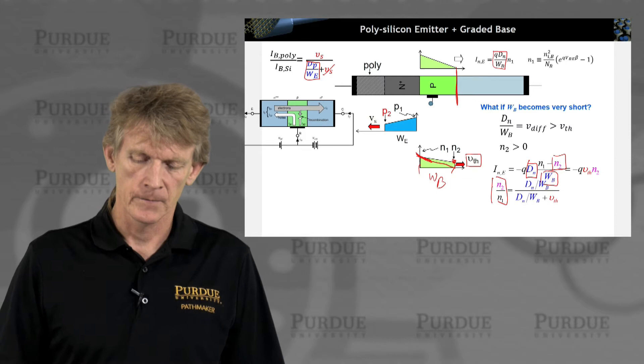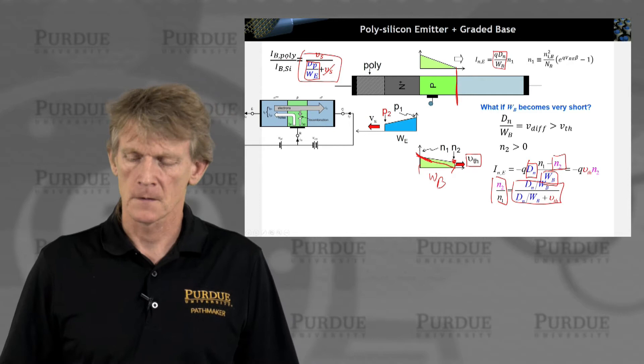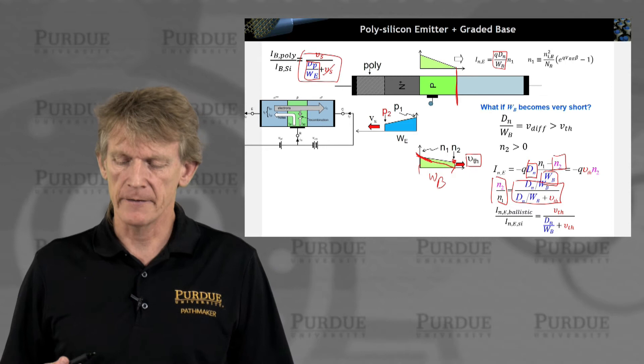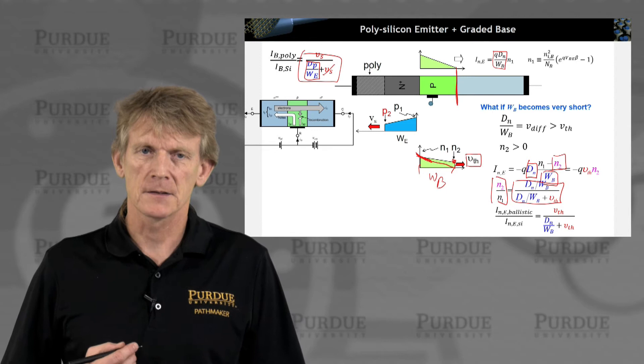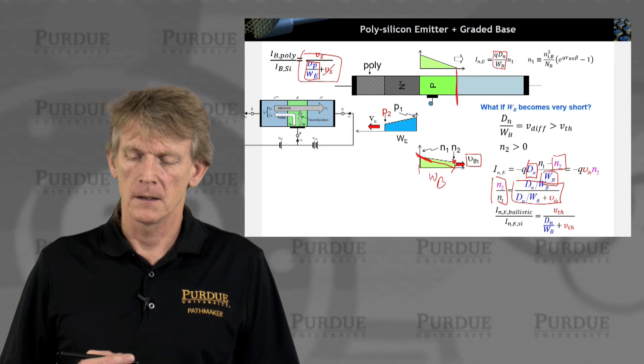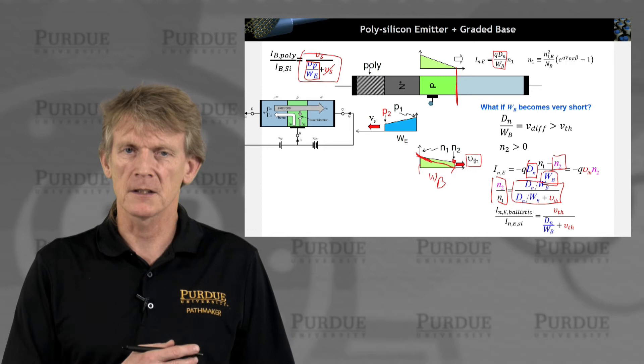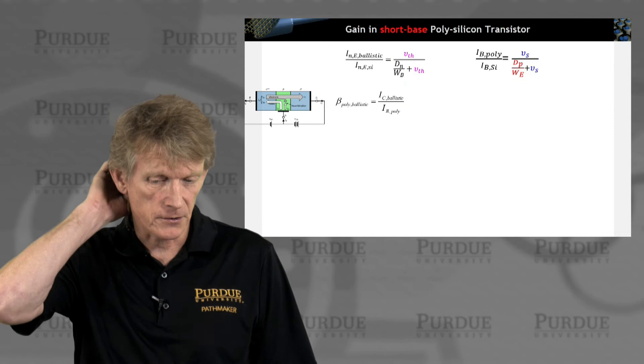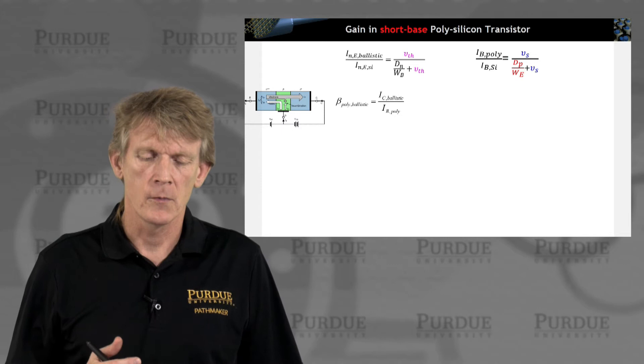And you can derive the same equivalent expression. Look, this is, look this guy here. It's the same ratio as what we had up here. So we can calculate, again, the effect of having the device becoming ballistic, meaning the diffusion velocities are larger than the thermal velocity, so we're basically starting to shoot through the structure, and we're limited by the thermal velocity of the structure.